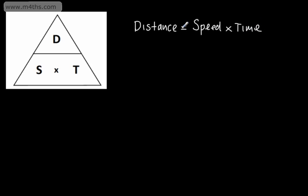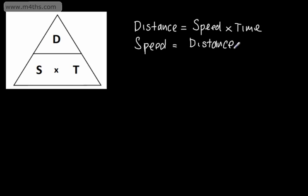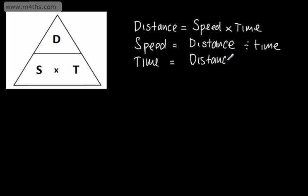Remember to put the correct units in. If we're dealing with a distance, it might be miles, meters, kilometers, or centimeters. If we wanted to now look at speed, what we would do is cover up the S, and it would be distance divided by time. This line here is a line for division. We can say that speed is going to be equal to the distance divided by the time. If we wanted to find the time, we would cover the T, and that would be distance divided by S, so it would be distance over speed. We can simply write that time is equal to distance divided by the speed.